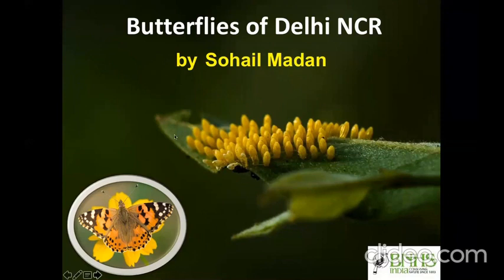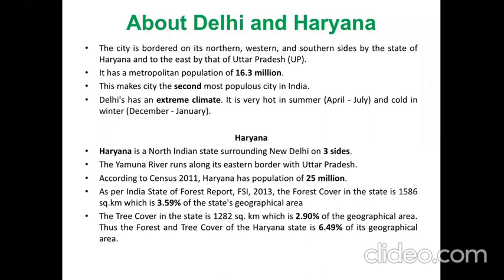As you know, Delhi is our capital city and it is bordered by UP and Haryana on two sides. It's quite populous — the metropolitan population is 16.3 million. It has an extreme weather climate in the sense that summers get too hot and winters get really cold. In this sort of environment, finding butterflies is a challenge, but with a strong community we've been able to do quite a bit of work.